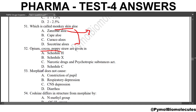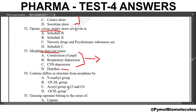Next question: morphine does not cause? The answer is diarrhea. Morphine causes constriction of pupils, respiratory depression, and CNS depression, but diarrhea is not caused by morphine. Next question: how does codeine differ in structure from morphine? The answer is by the OCH3 group.